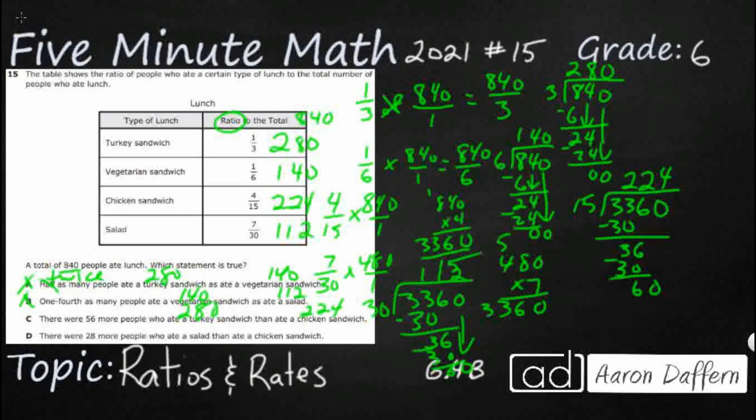'20 more people ate a salad than a chicken.' Salad is 112, chicken is 224. No, they ate less. So my answer is C.